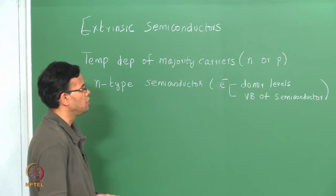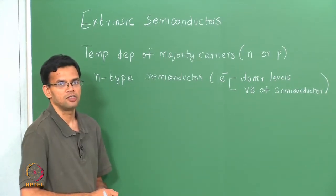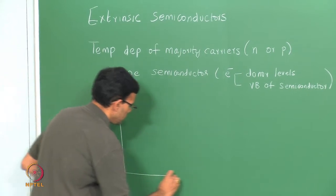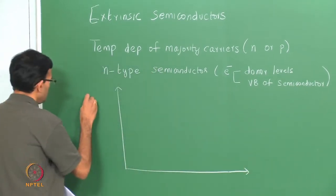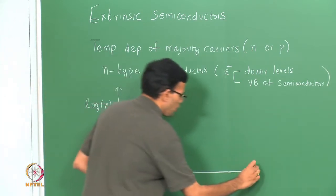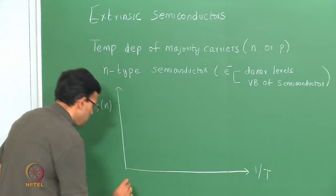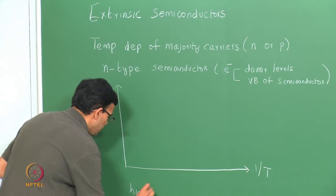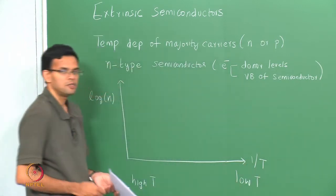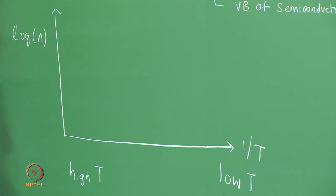Putting these two together, we did a plot of the log of the electron concentration versus 1 over T. This is log of n on the y-axis and 1 over T on the x-axis. Since this is 1 over the temperature, the left side represents the high temperature side and the right side represents low temperature. In this plot, we said that we could divide an extrinsic semiconductor into essentially three regions.